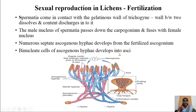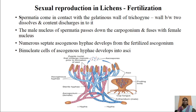At the time of fertilization in ascolichens, spermatia released from the spermogonium come in contact with the gelatinous wall of the trichogyne. The trichogyne is the female cell. When spermatia come in contact with the trichogyne, the wall between the two dissolves and the contents of the spermatia discharge into the trichogyne. The trichogyne is multicellular with cross walls provided with small pores called septal pores, through which the contents of the spermatia move down to reach the ascogonium.